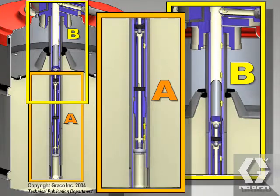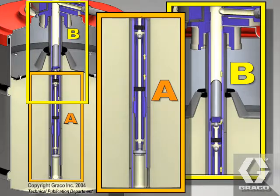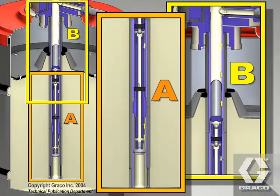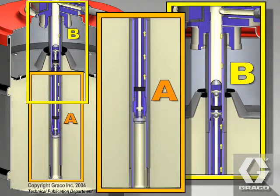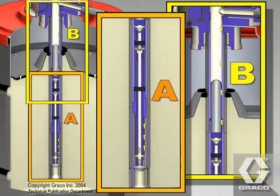On the downstroke, the priming piston at the bottom of the pump moves down into the lower pump cylinder, creating a low pressure area. As the priming piston clears the slots at the bottom of the pump, grease is pushed into the low pressure area.